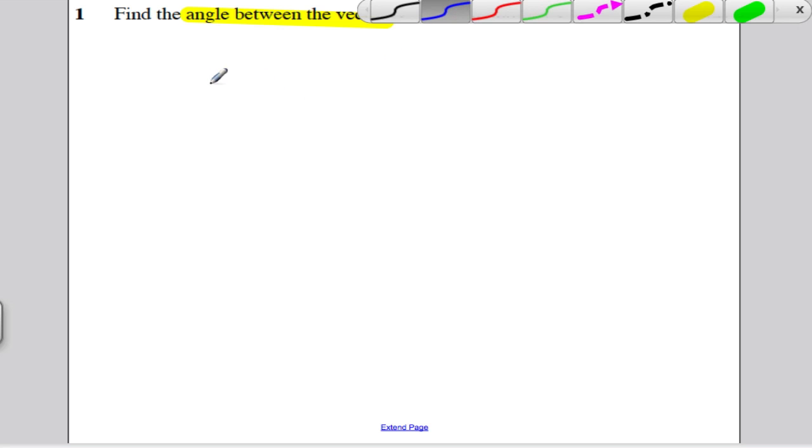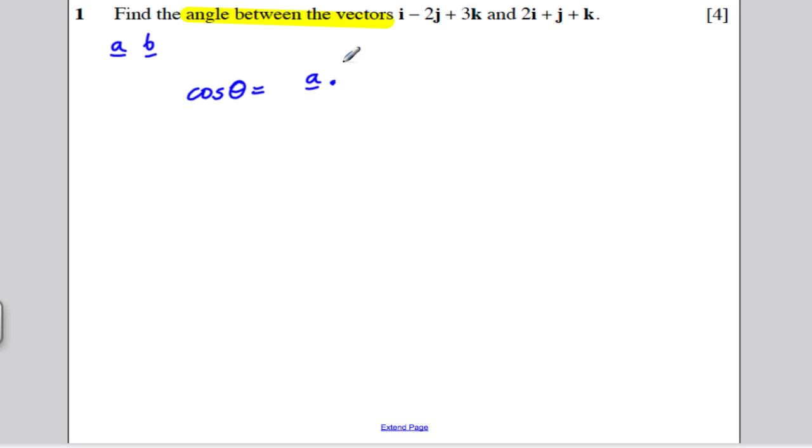The formula for that is, between 2 vectors - if I want to find the angle between 2 vectors A and B, let's say - I use the formula cos theta is the dot product of the 2, A dot B, all divided by the size of A multiplied by the size or magnitude of B. Simple as that.